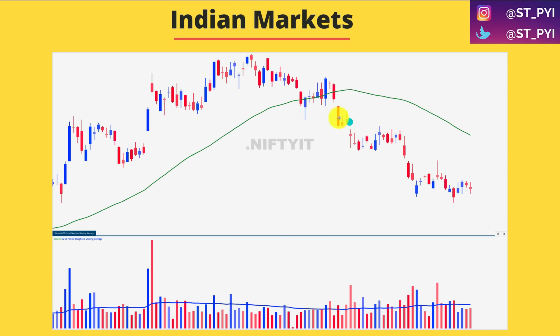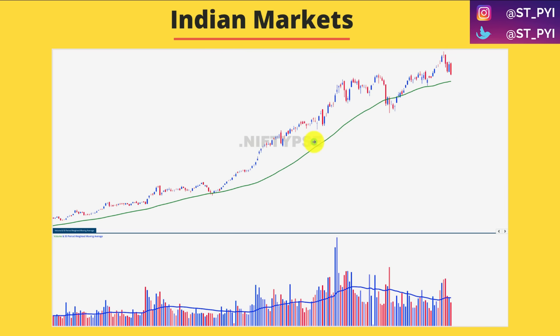The next sector is IT. IT continues to remain below the 50 DMA — it needs some time. It will form a proper stage and move above the 50 DMA. For long-term ETF investors in IT, IT is just at the 200-day moving average. Pull out your charts and look at whenever IT has hit the 200-day moving average — after that, look at what has happened. A couple of years down the line you'll get the answer of what needs to be done. But this is for long-term systematic players. Currently, for traders, the structures are not great in the IT sector.